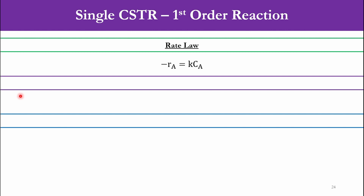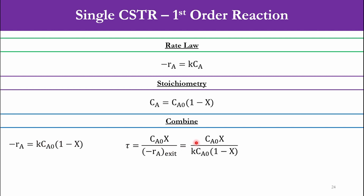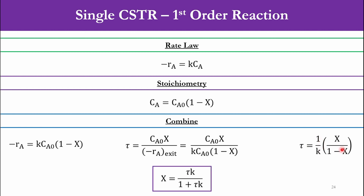The rate law for a first order reaction A→B is: minus RA equals K·CA. For stoichiometry: CA equals CA0·(1−X). Combining these, minus RA equals K·CA0·(1−X). Substituting into the tau expression: tau equals CA0·X over K·CA0·(1−X). The CA0 terms cancel, giving tau equals (1/K)·X/(1−X), or rearranged: X equals tau·K over (1 + tau·K). This is the conversion expression for a first order CSTR system.